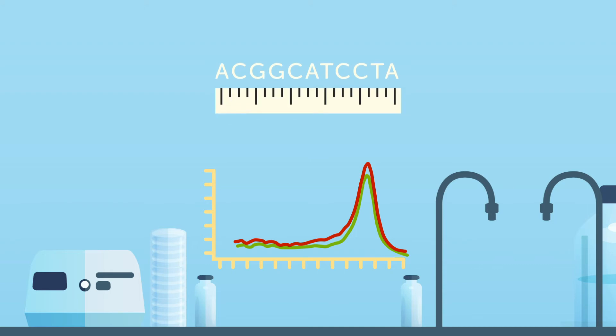As a result, melt curve analysis can be very useful in verifying the specificity of a reaction by giving us information on the number and size of amplicons present.